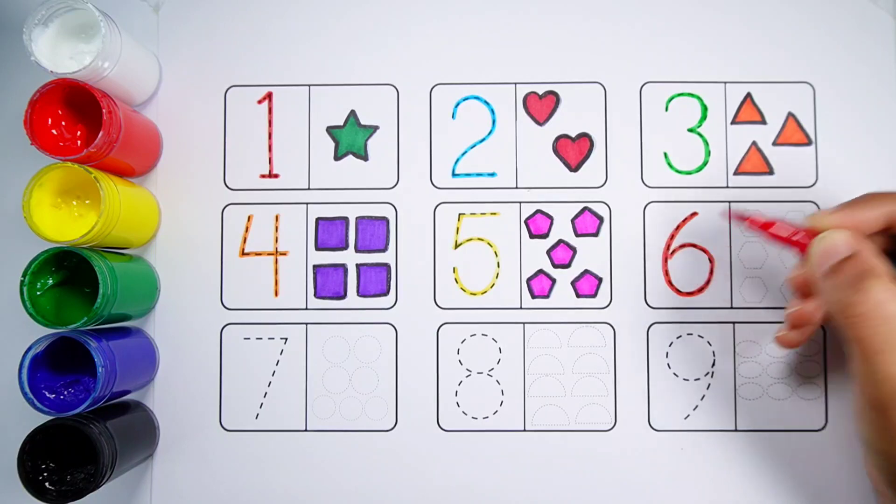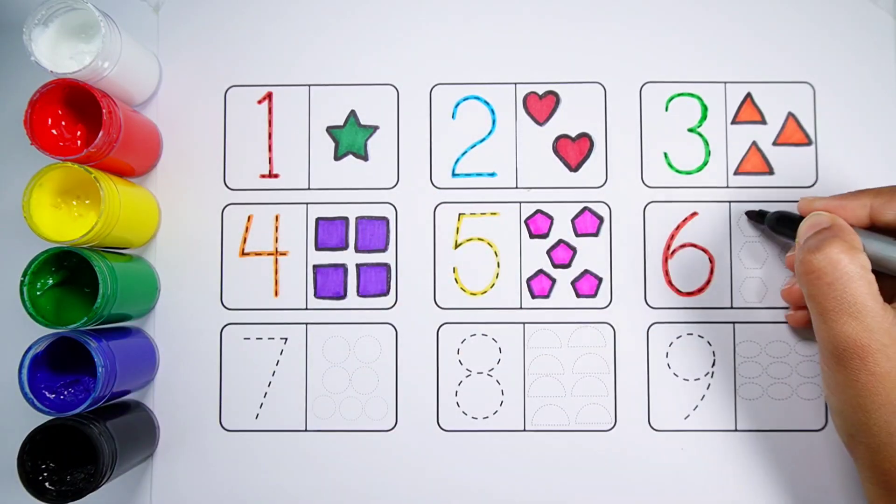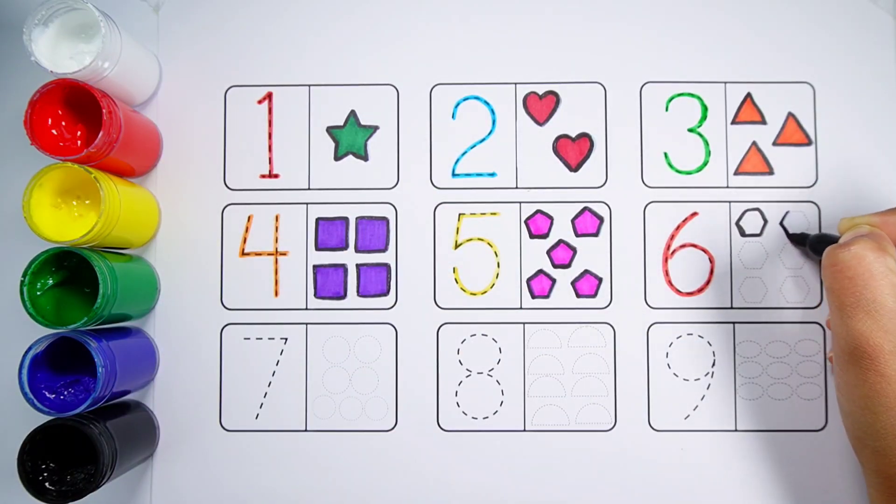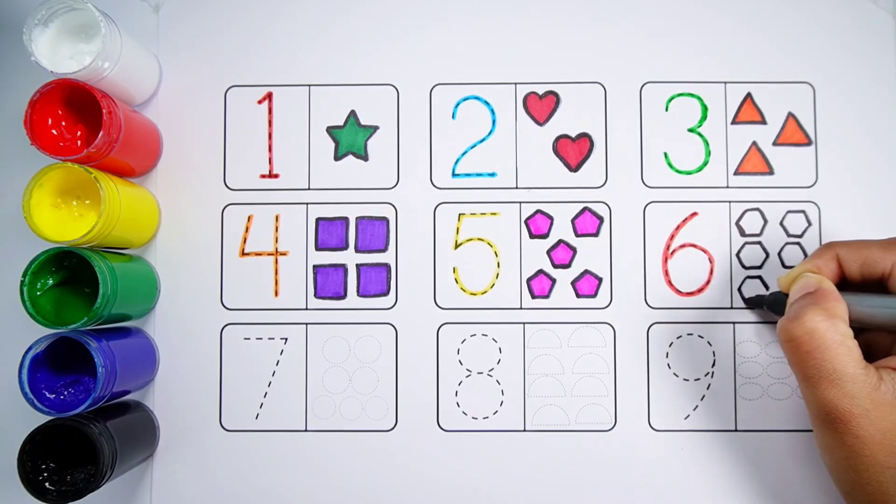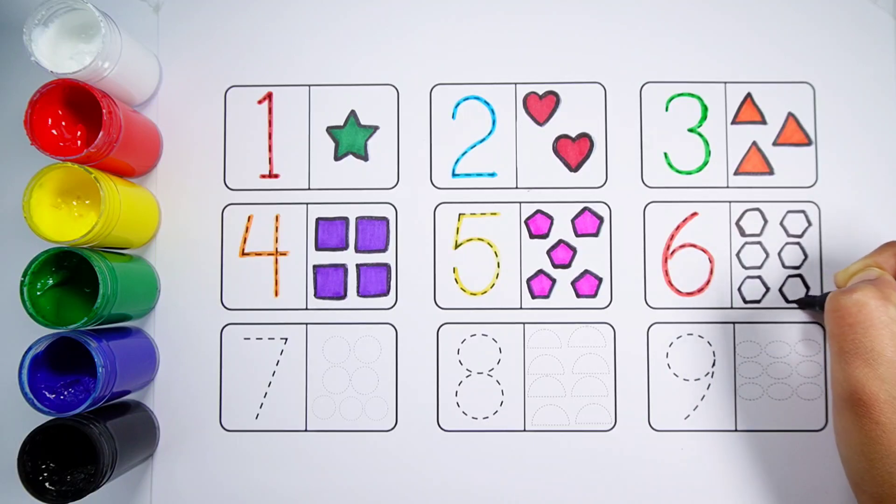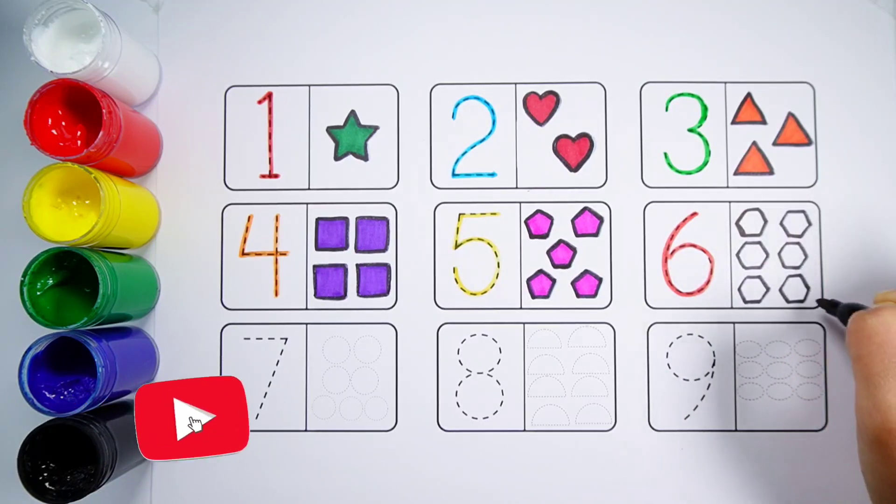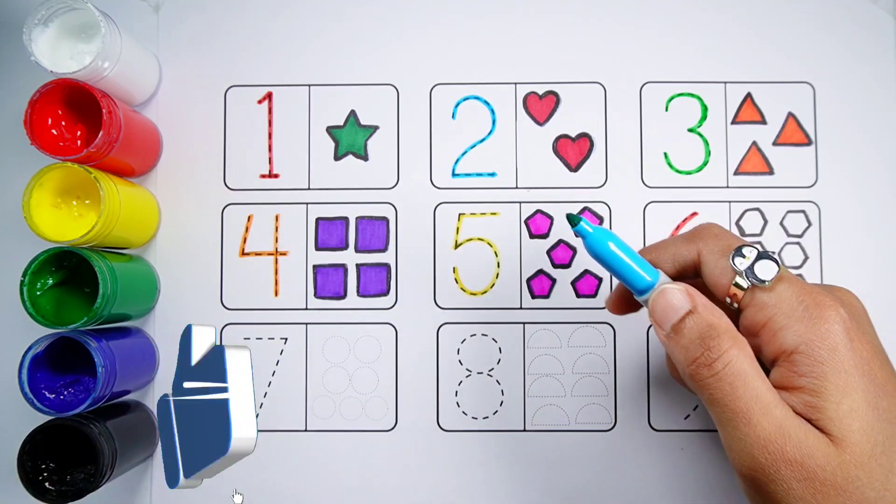Number 6. One, Two, Three, Four, Five, Six. Six Hexagons. Blue Color.